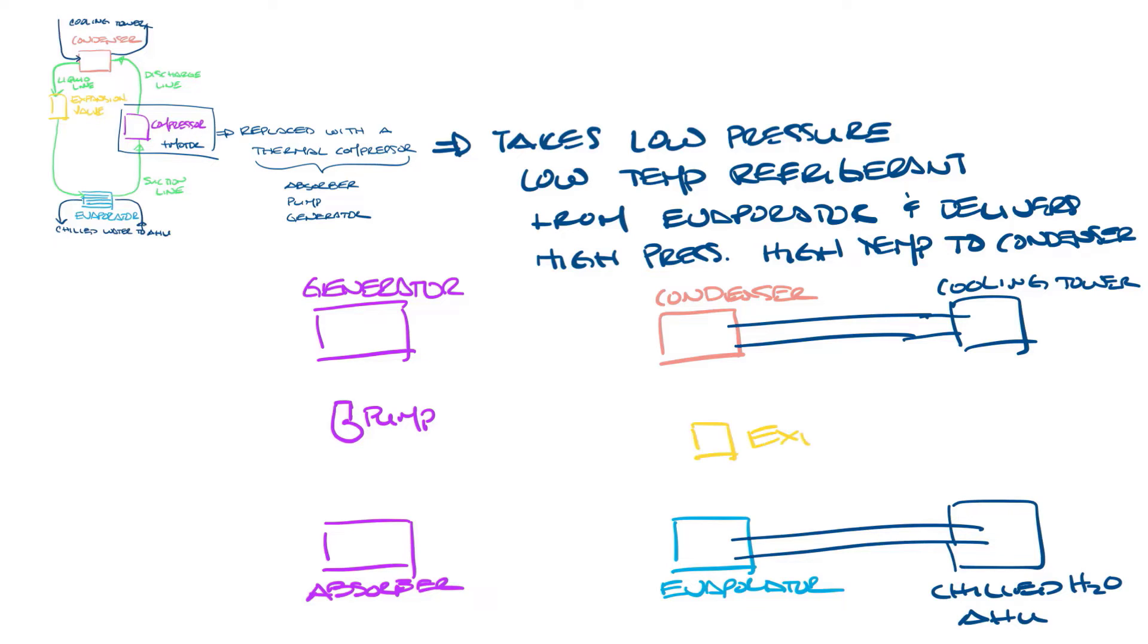And then let's draw in the expansion valve. So just like before, refrigerant will flow from the condenser to the expansion valve to the evaporator.